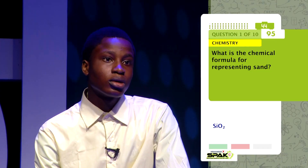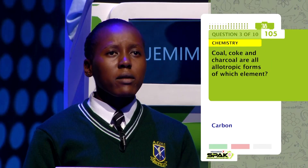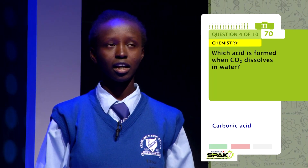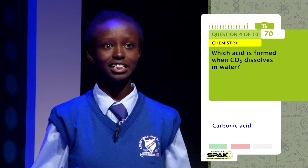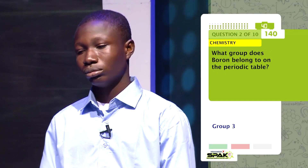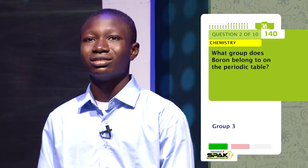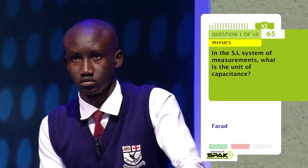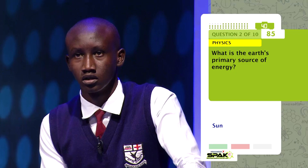Get ready for more action in the Advanced Round as our contestants tackle 10 questions each within a 45-second window. What is the chemical formula for representing sand? What acid is formed when CO2 dissolves in water? Carbonic acid. What group does boron belong to on the periodic table? Group three. What is the chemical symbol representing W? What name is given to all available places on Earth that support life? In the SI system of measurements, what is the unit of capacitance? What is the Earth's primary source of energy?